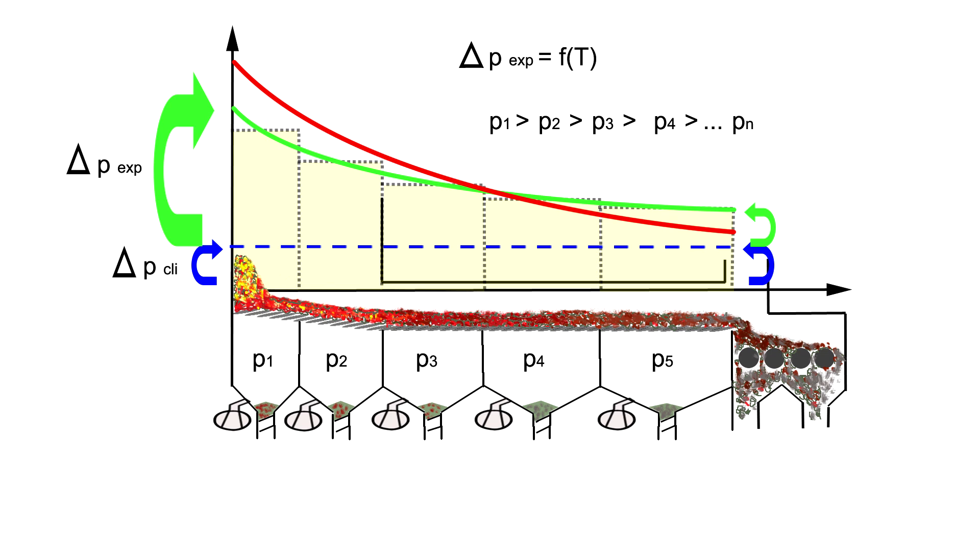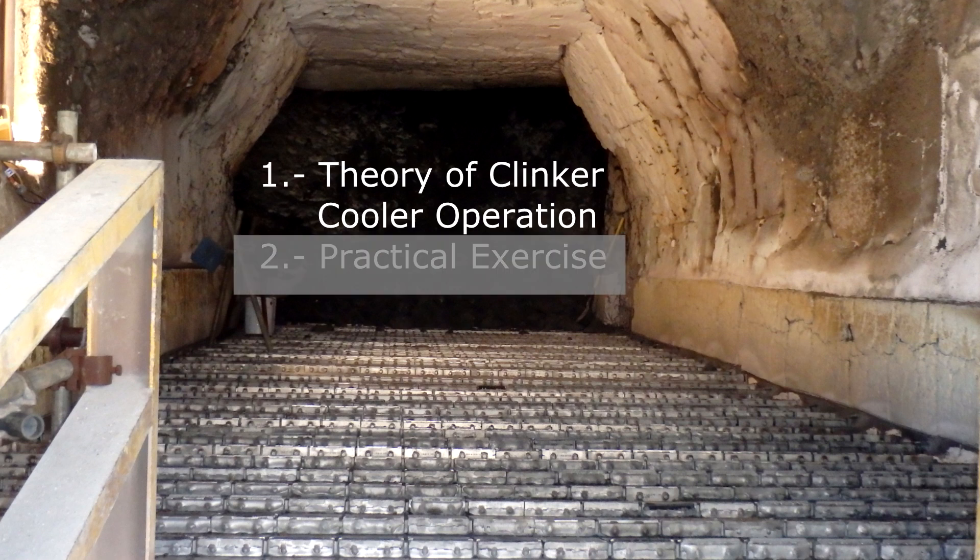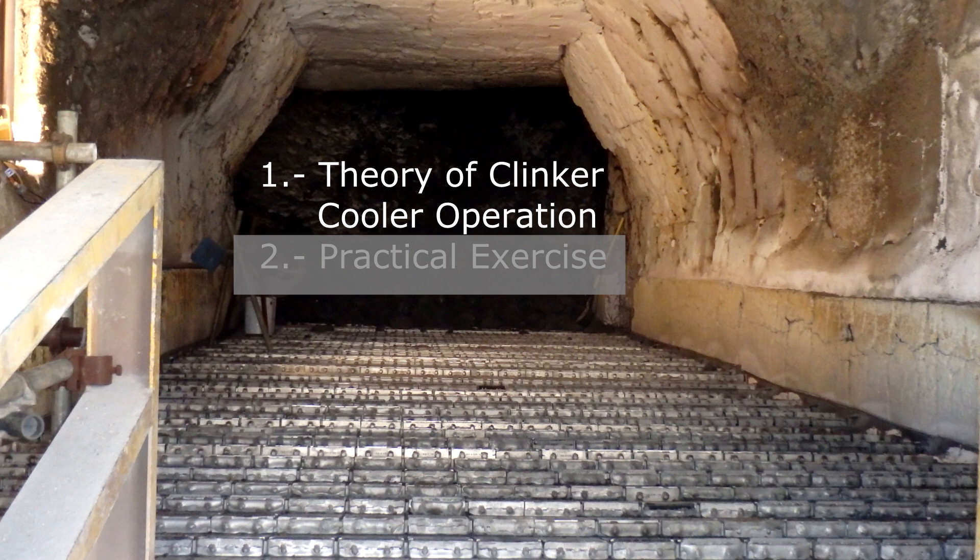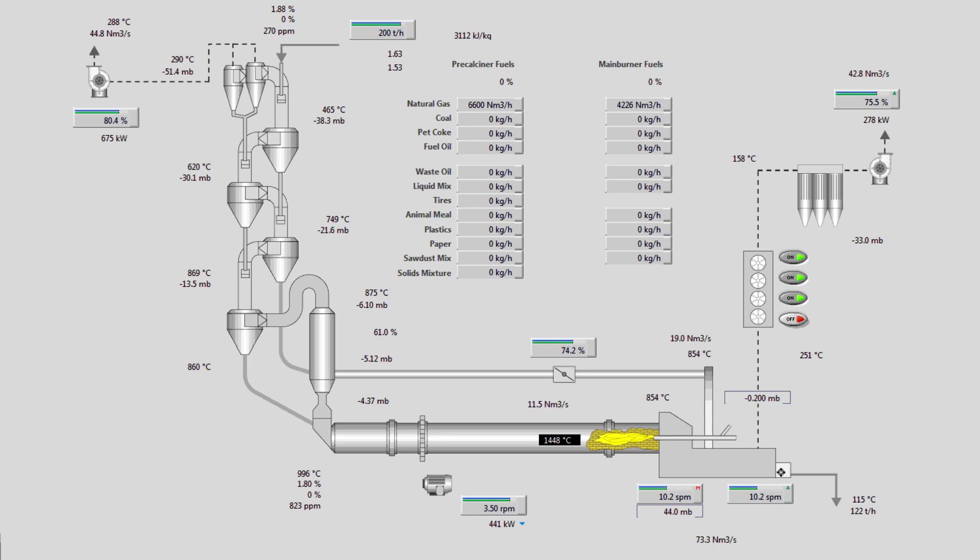Let us have a look at the real cooler. We have seen the theory on clinker coolers. Let us run a practical exercise. Here is the kiln we will work with: dry process, 5 stages, pre-calciner, 3000 tons per day production rate.